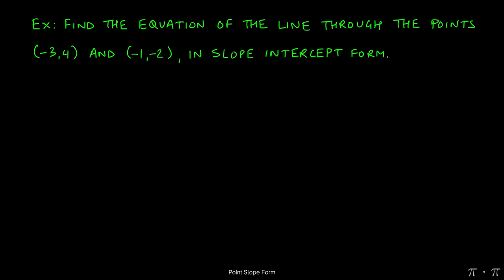Let's say we're asked to find the equation of the line that passes through (-3,4) and (-1,-2), but in slope-intercept form. First, we obviously need to find the slope because without it, we cannot use either slope-intercept form or point-slope form.